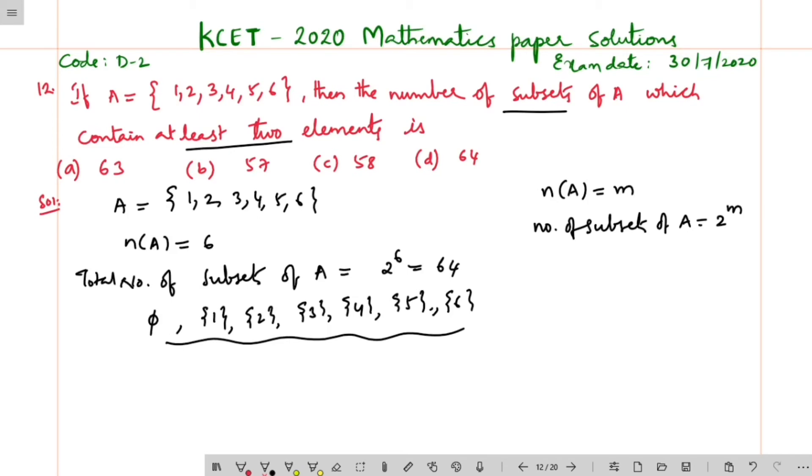These are the seven subsets we have to delete from this total number of subsets. The remaining onwards we will be having minimum 2.